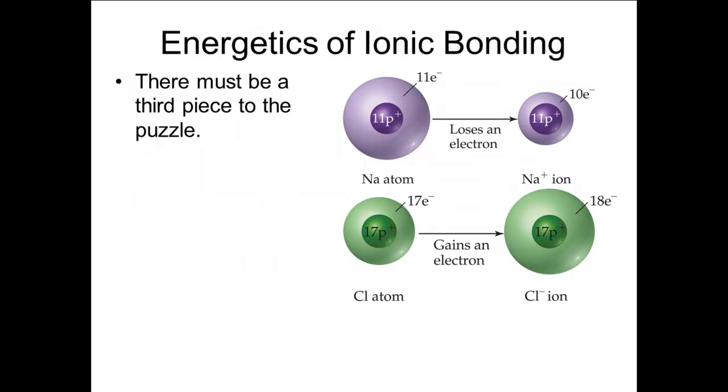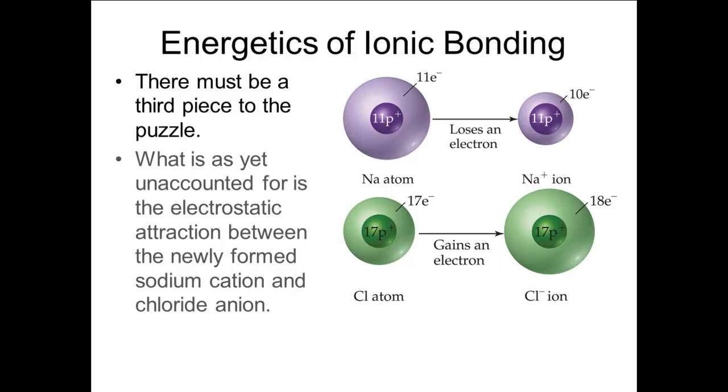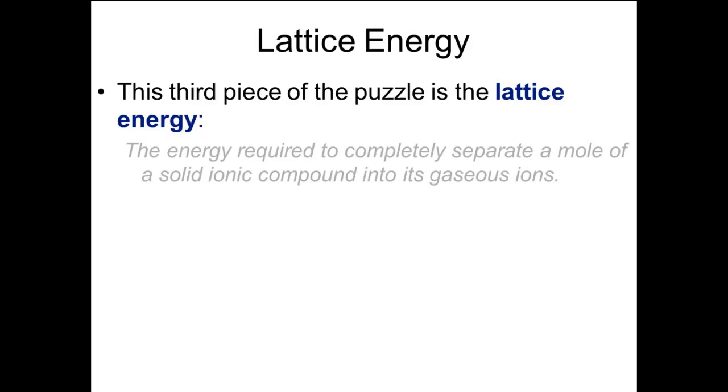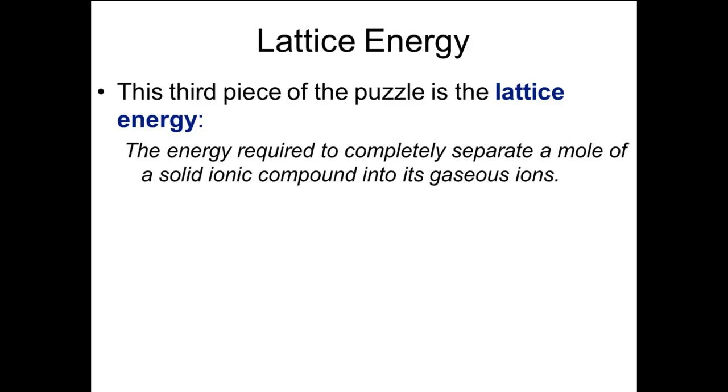The missing piece of the energy relation is the attraction between the newly formed sodium cation and chloride anion. The ions lose energy as they come closer together to form the solid. This energy is called the lattice energy, which is the energy required to completely separate a mole of solid ionic compound into its gaseous ions. We could also define lattice energy as the energy released when gaseous ions come together to form one mole of an ionic solid.